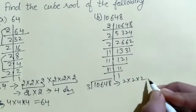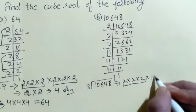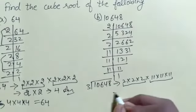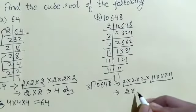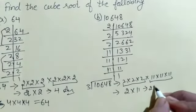We make pairs: 2 one pair, 11 one pair, so 2 times 11, the answer is 22.